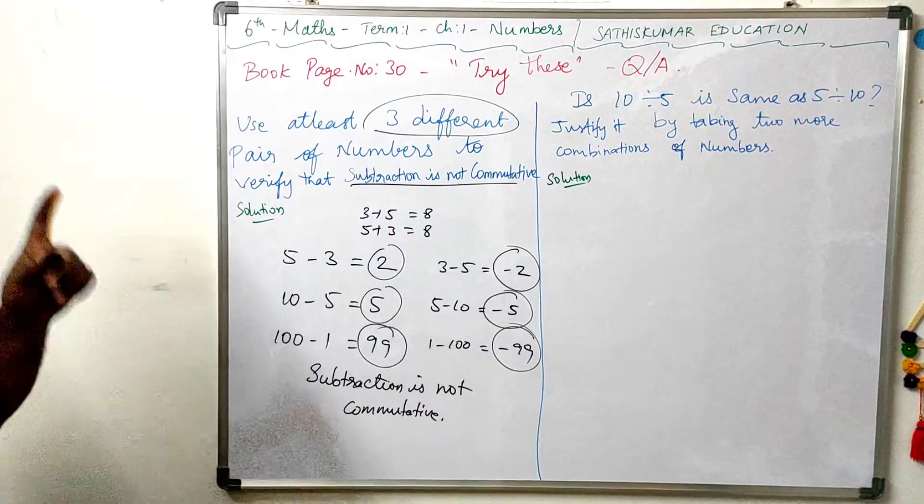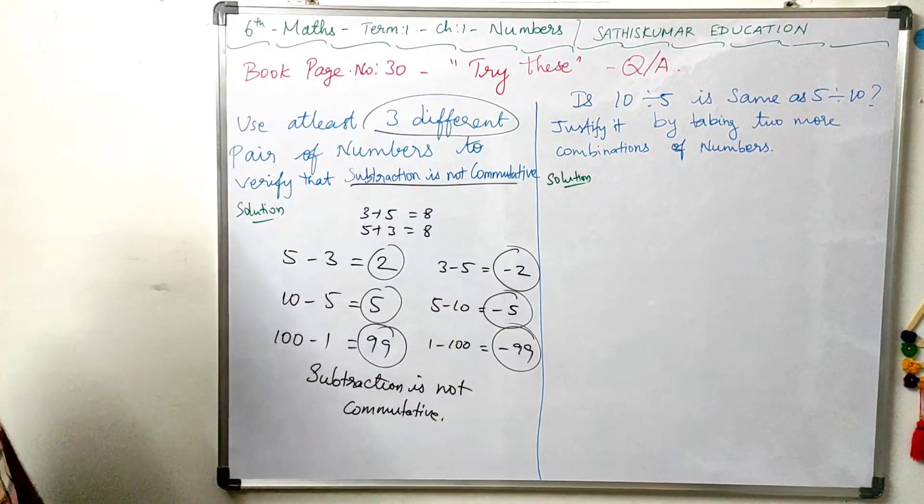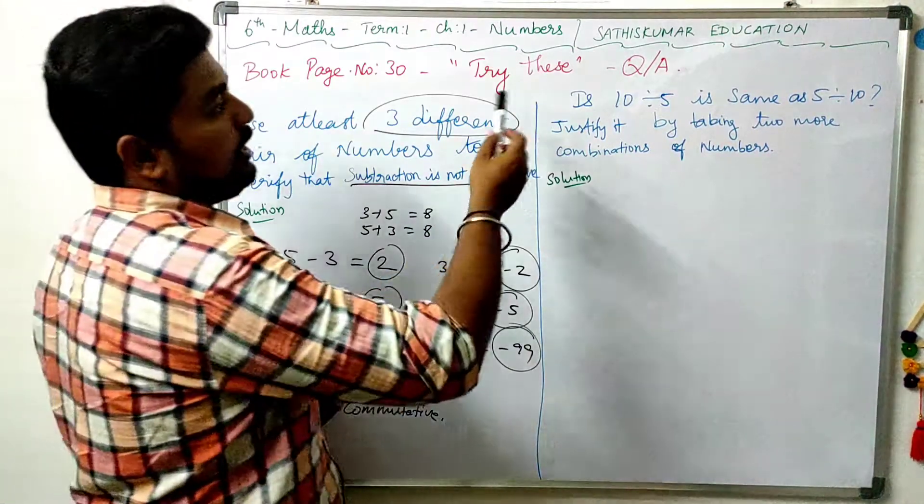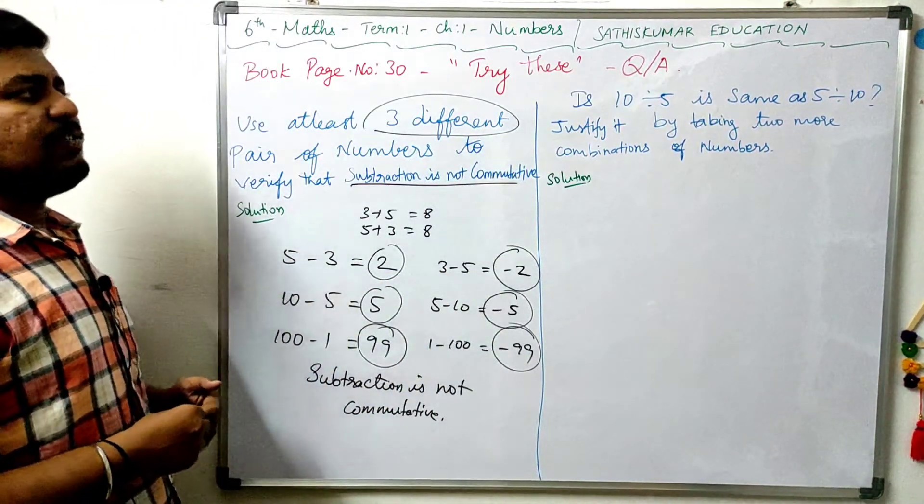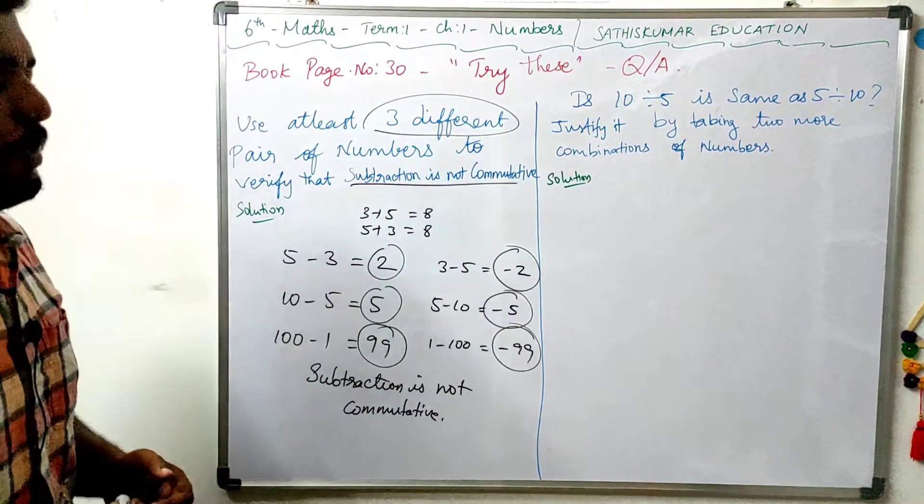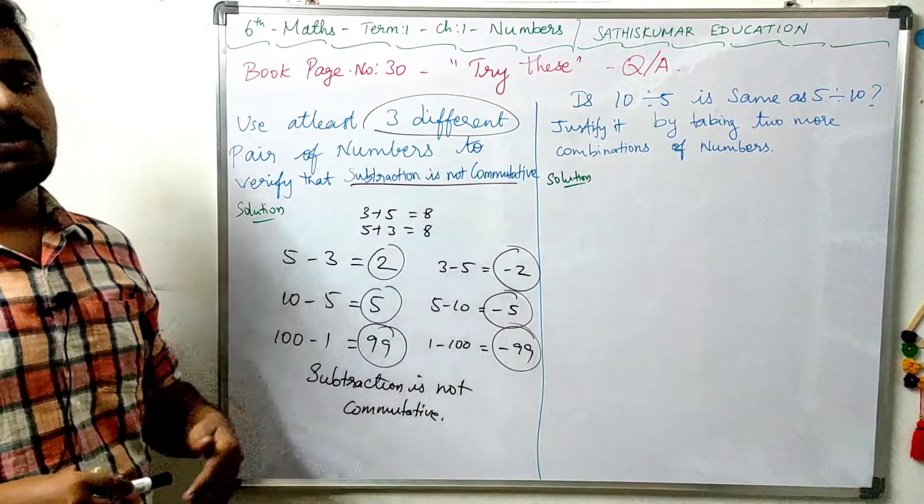Simple. Let's check: Is 10 divided by 5 the same as 5 divided by 10? Justify it by taking two more combinations of numbers. This is the subtraction. Let's check division.